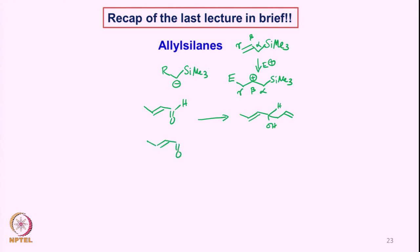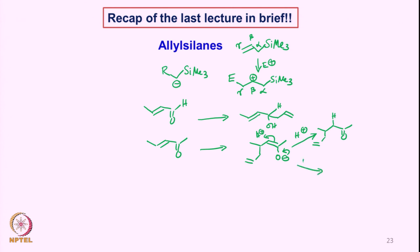On the other hand, if we take an alpha-beta unsaturated ketone, the Michael addition does take place and you get addition of the allylsilane, and we saw that you can generate an enolate. This can either react with a proton to form the addition product, or it can react with an electrophile to give addition of the carbon-electrophile bond. This is the 1,4 addition or Michael addition product, and such reactions are called the Sakurai reaction.